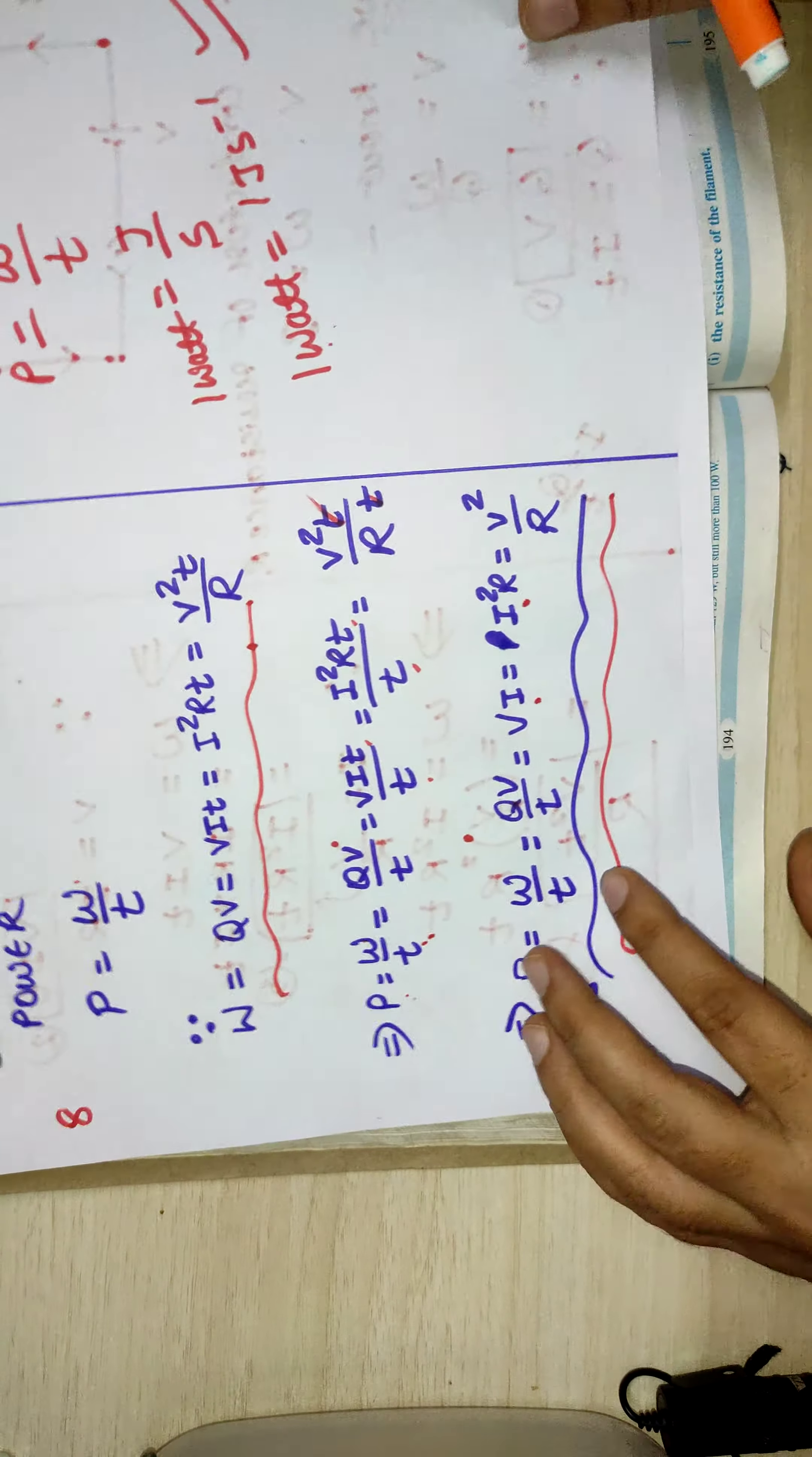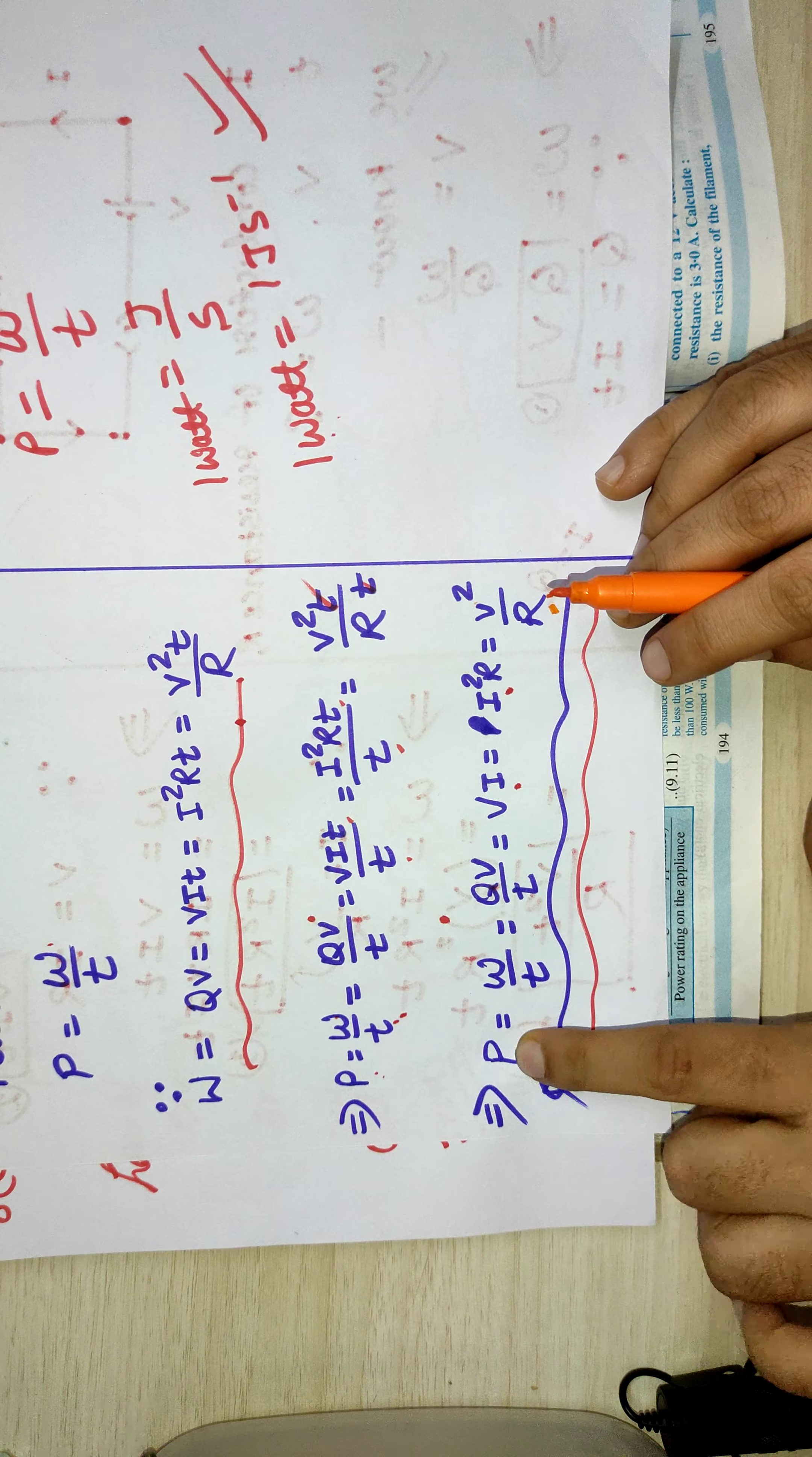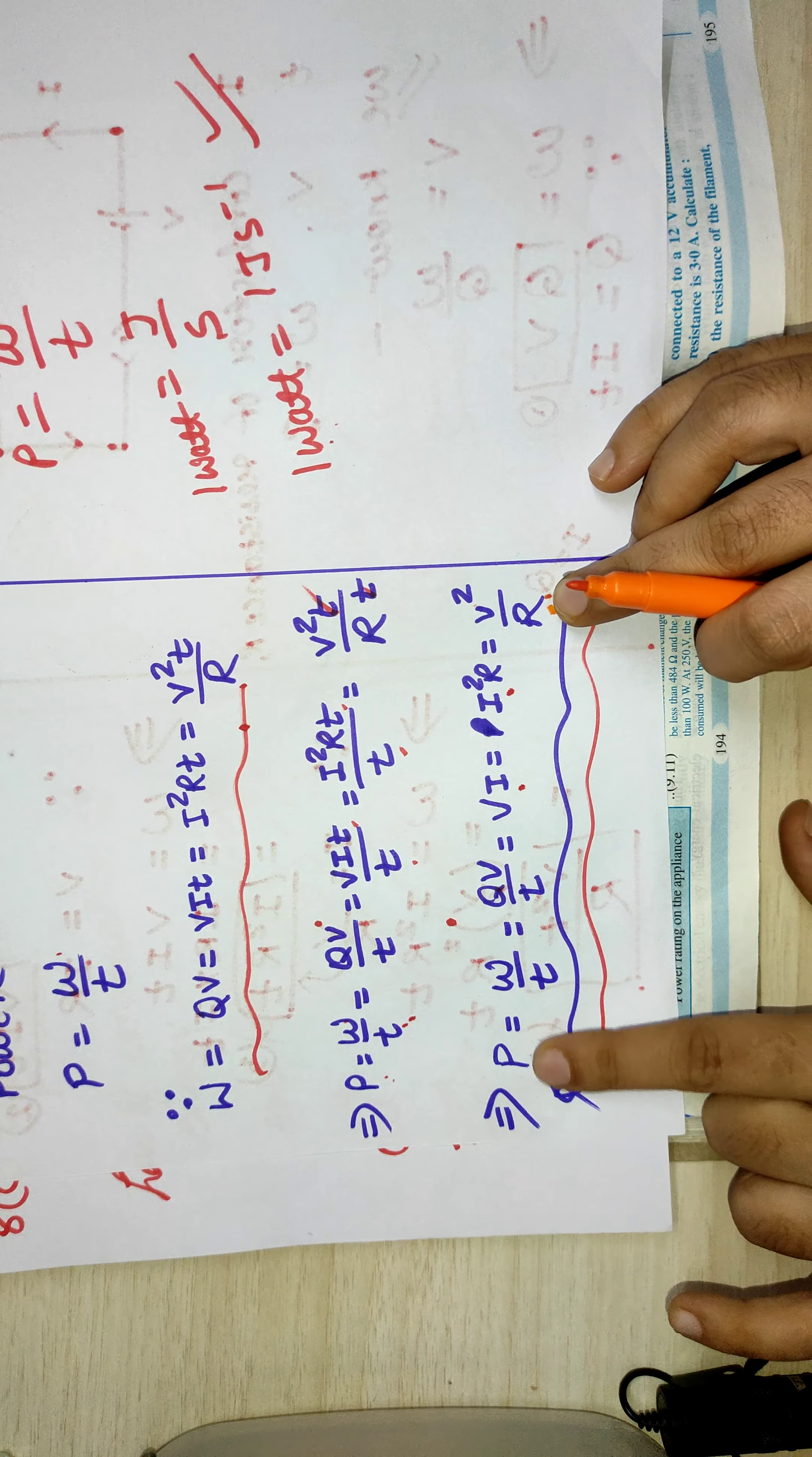We have different formulas. So suppose we are using this formula for power, this one: V squared by R. You are knowing the value of P, you are knowing the value of V, you can calculate R.